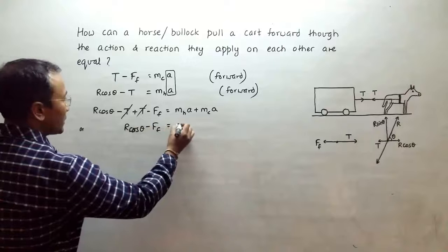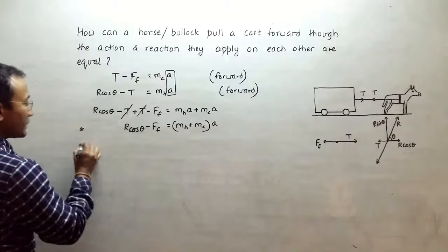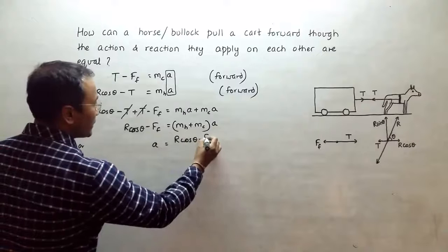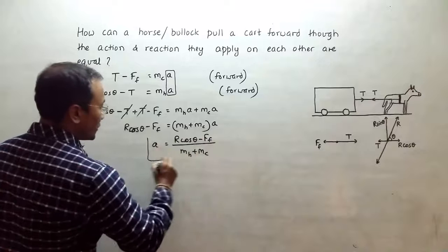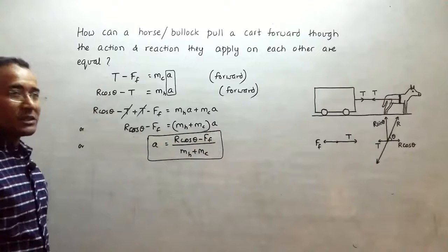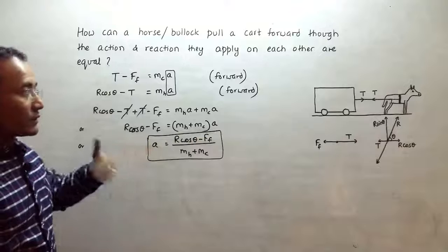Then we have a is equal to R cos theta minus FF divided by (mH plus mC). So if the horse can apply force in such a way that R cos theta is more than this frictional force, we will have a positive acceleration or the forward acceleration.